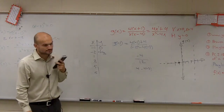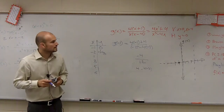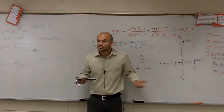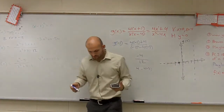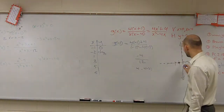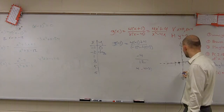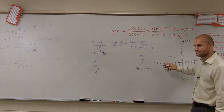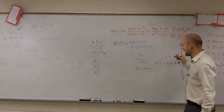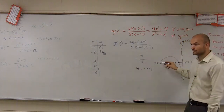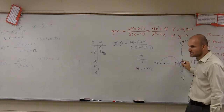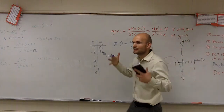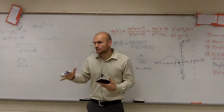Student question: can the graph always approach but never cross the dotted asymptote line? It's not always the case. For horizontal asymptotes, the graph can cross the line — what matters is end behavior. As the graph goes to infinity or negative infinity, it approaches that line, so it is still an asymptote even if it crosses it at some finite point.